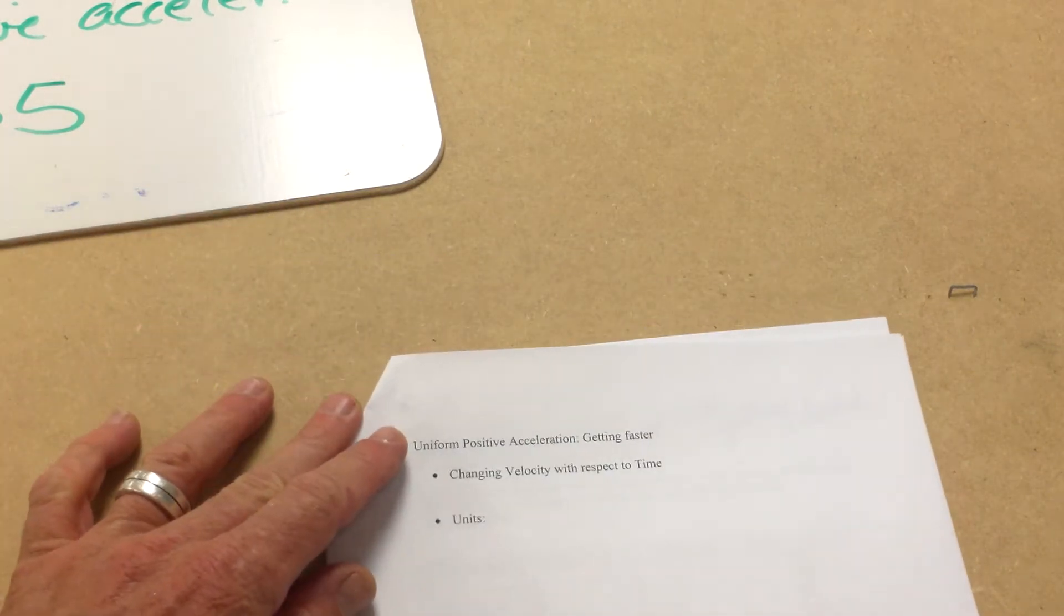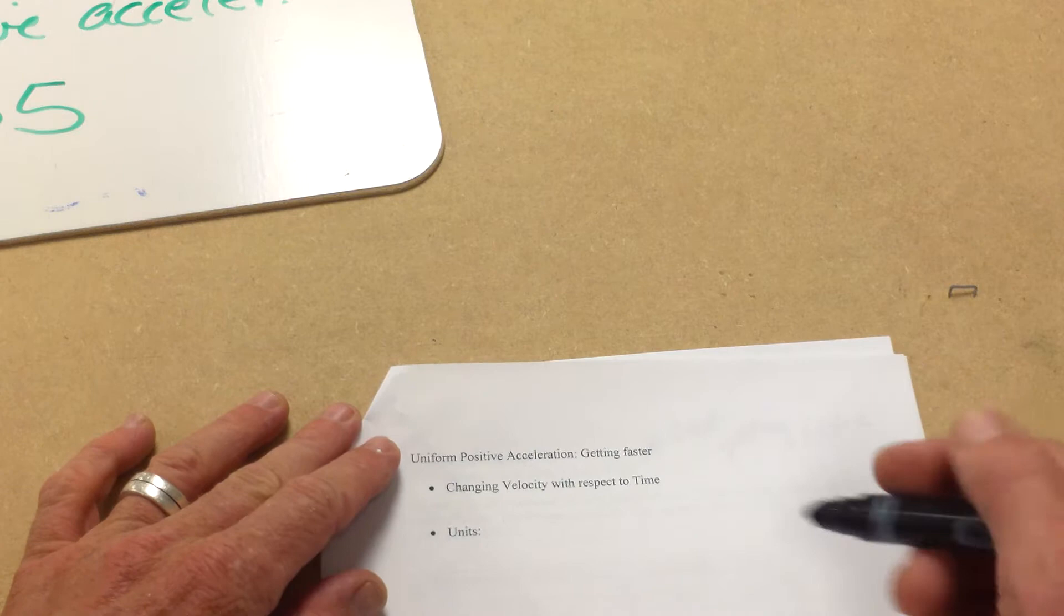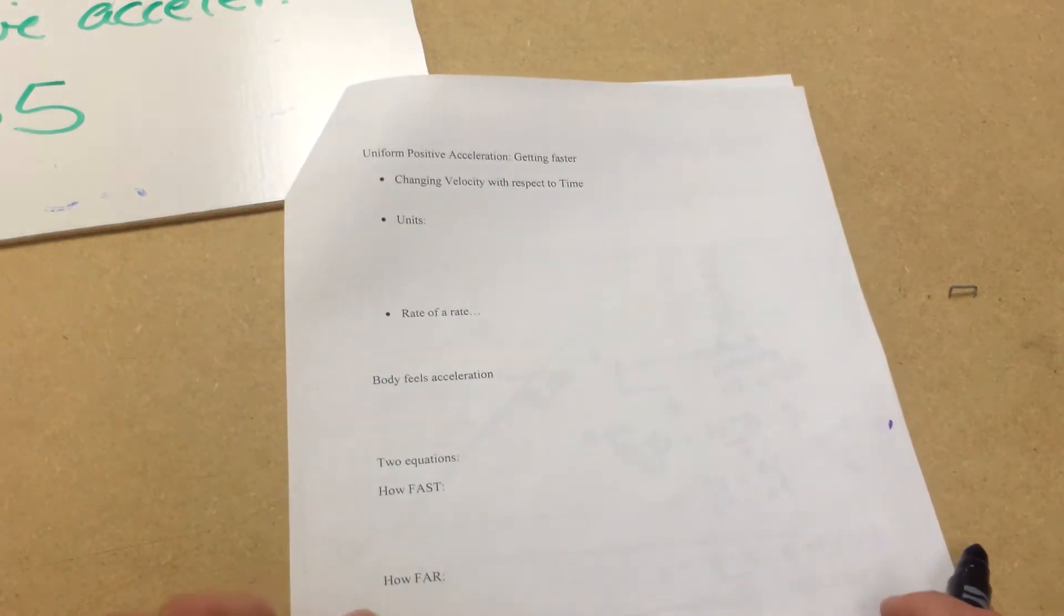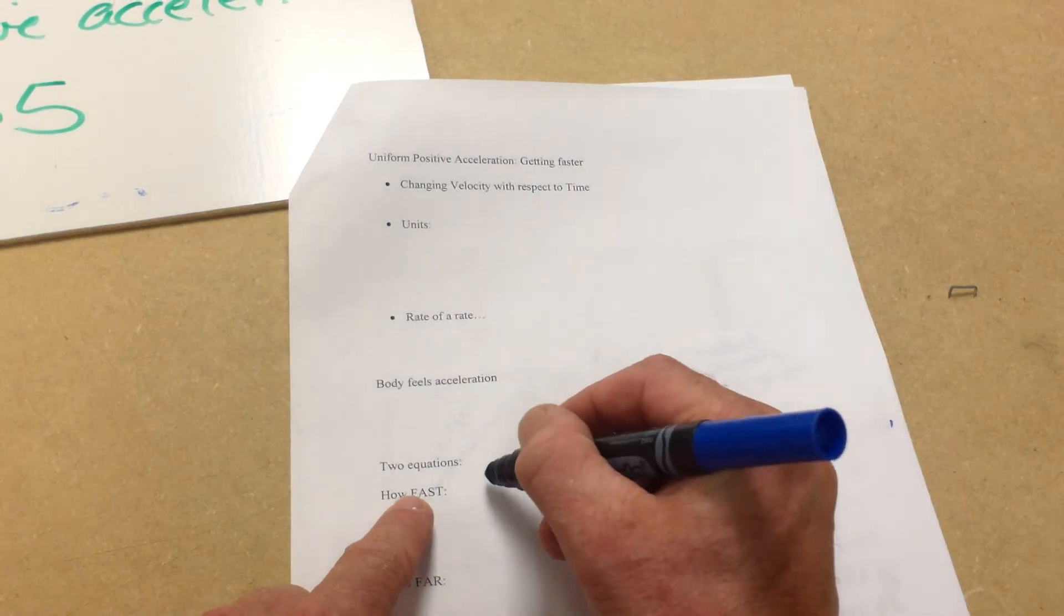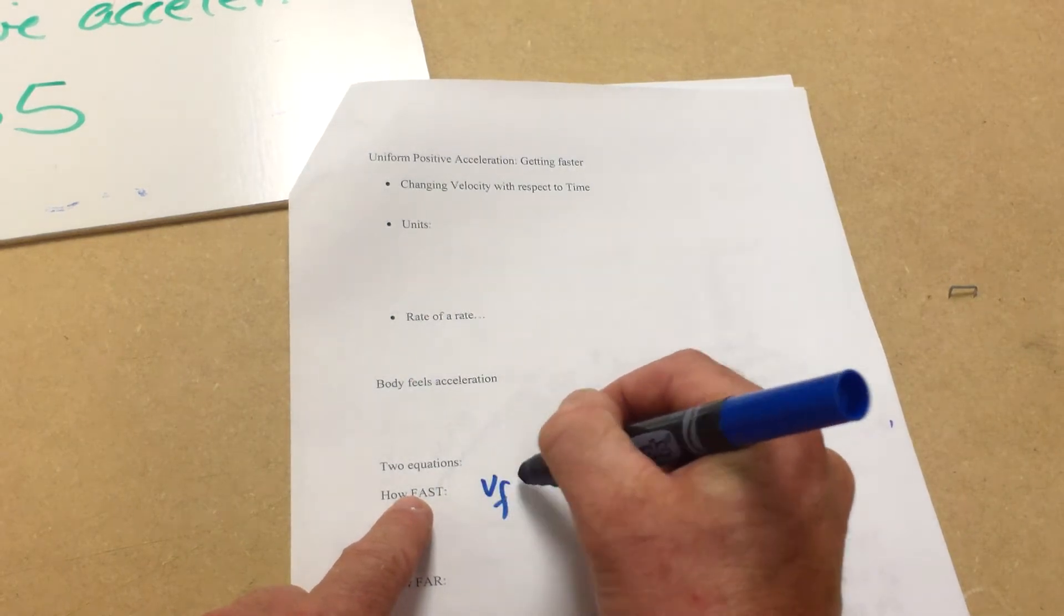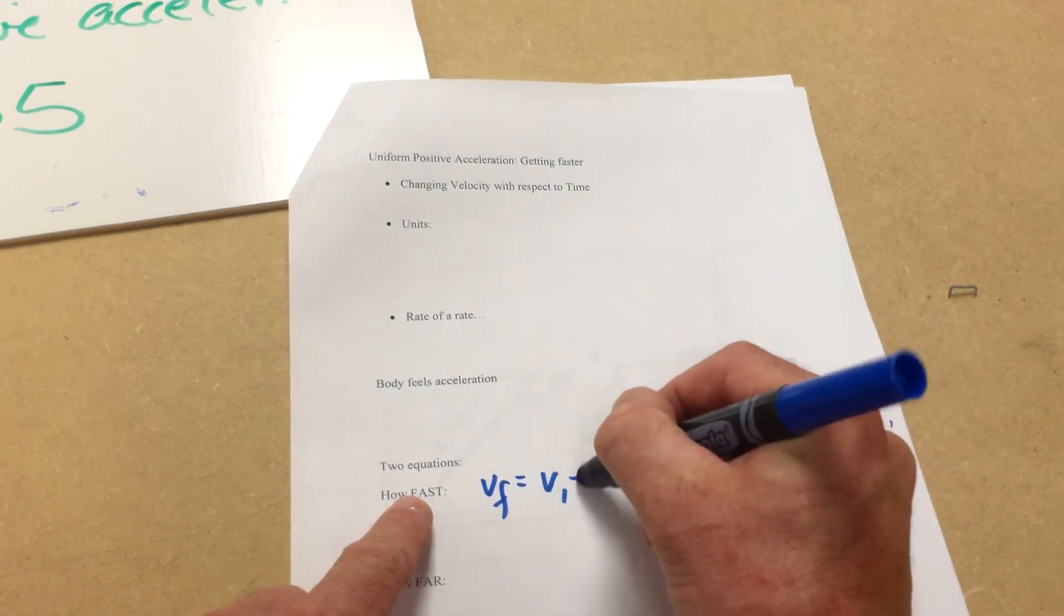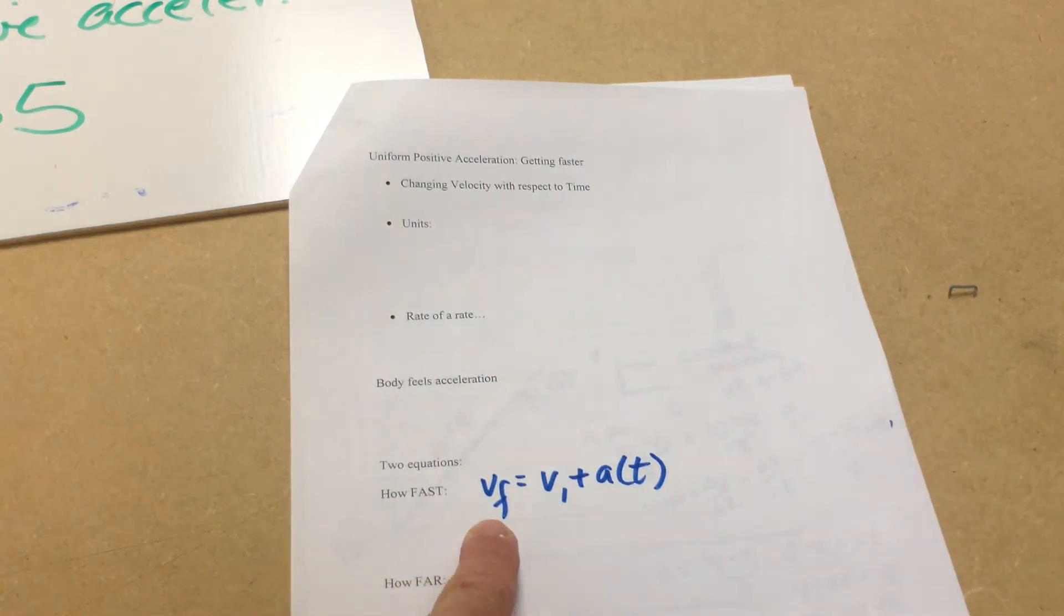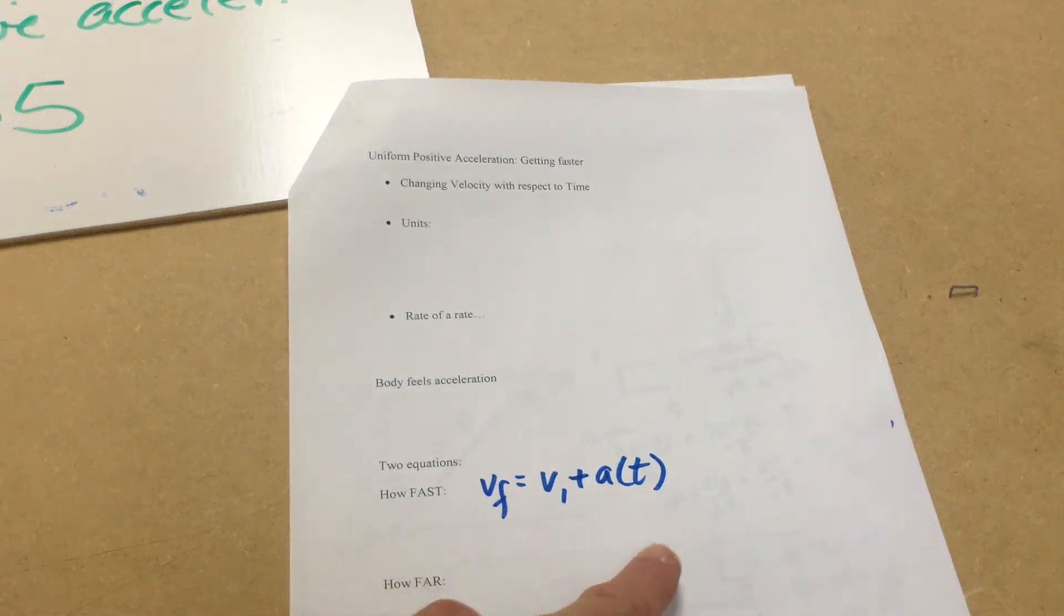Basically we've really had kind of two equations here. Our how fast equation, and that's kind of right here, and that would be vf equals vi plus at. This is our final velocity, this is our initial velocity, this is the acceleration, that's just a number, and this is time.